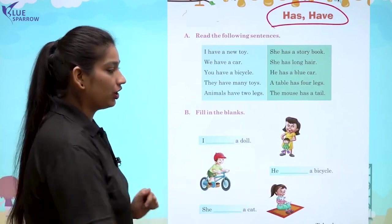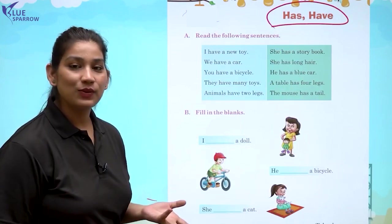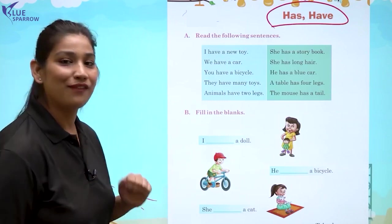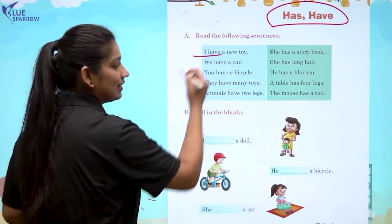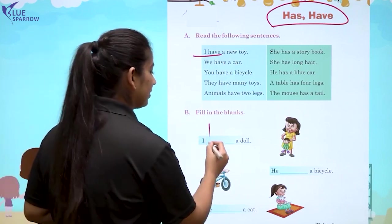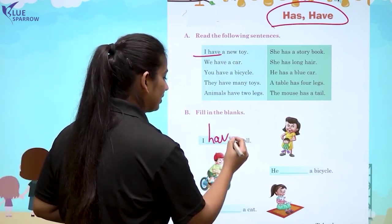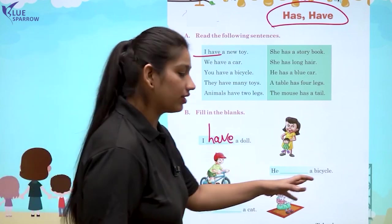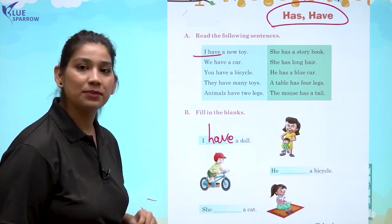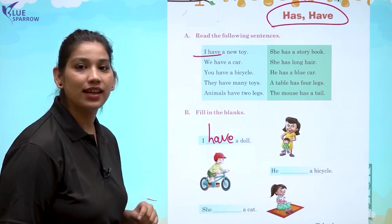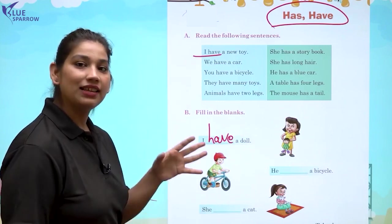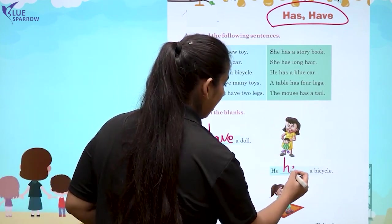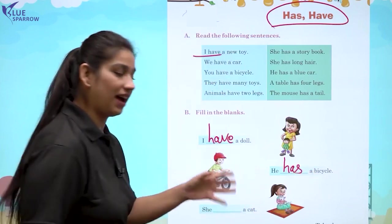I dash a doll — I ke saath hum kya use karte hai? I ke saath hum have ka use karte hai. I have a doll. He dash a bicycle — he ke saath hum has ka use karte hai. He has a bicycle.